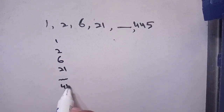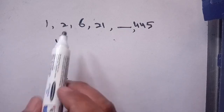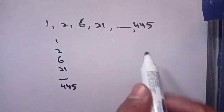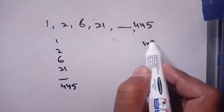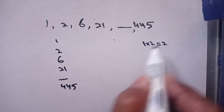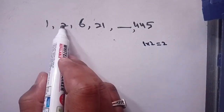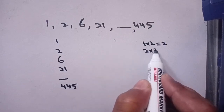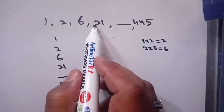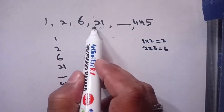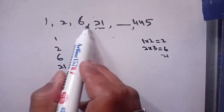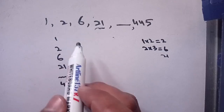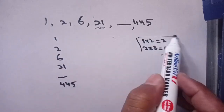First, let's try a simple multiplication pattern. 1 multiplied by 2 gives 2, and 2 multiplied by 3 gives 6. But the fourth term is 21, and 21 cannot be made by multiplying 6 by any simple integer in this pattern, so this pattern is rejected.